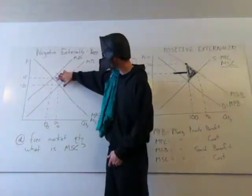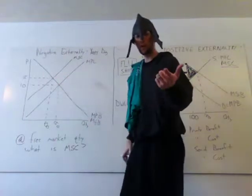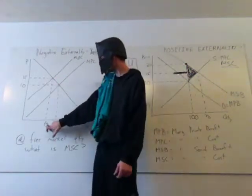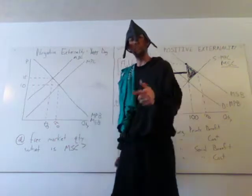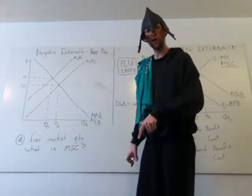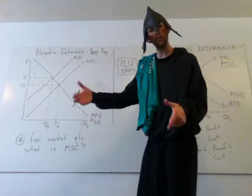Because, here's socially optimal, and here's free market. So, the inefficiency, again, falls between 100 and 150, but look, which is the better quantity, or the socially optimal quantity, 150 or 100?